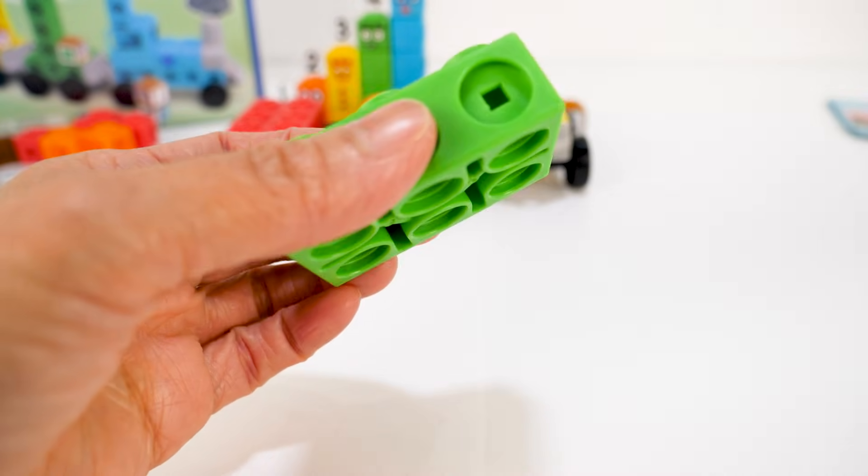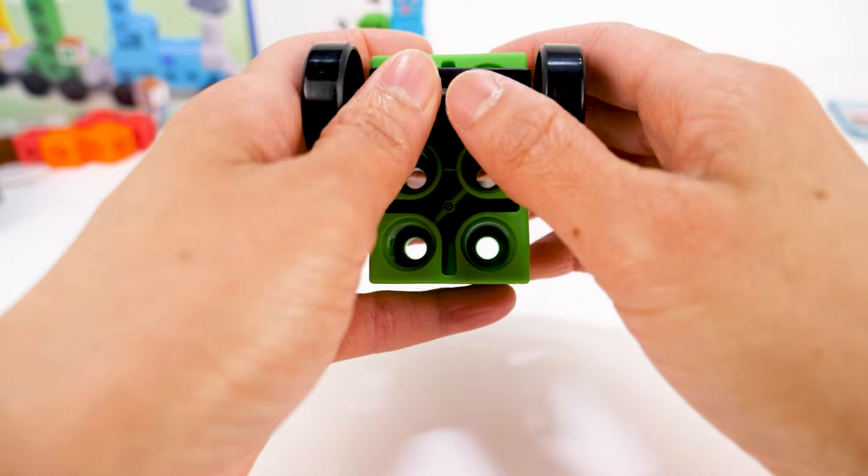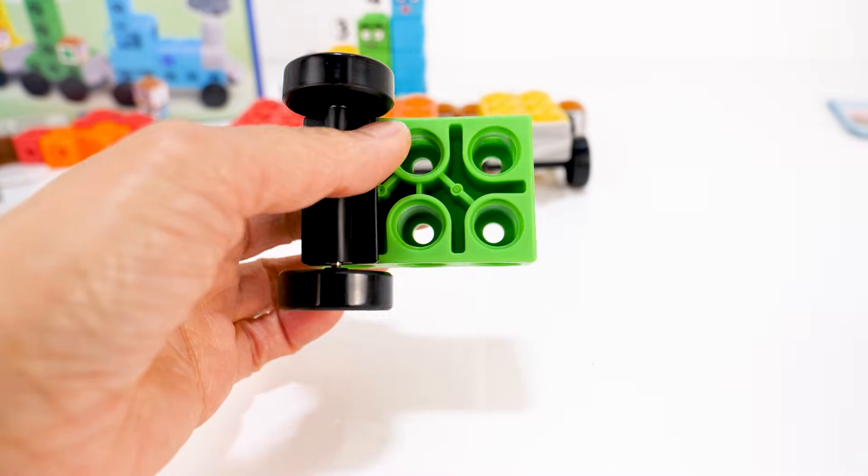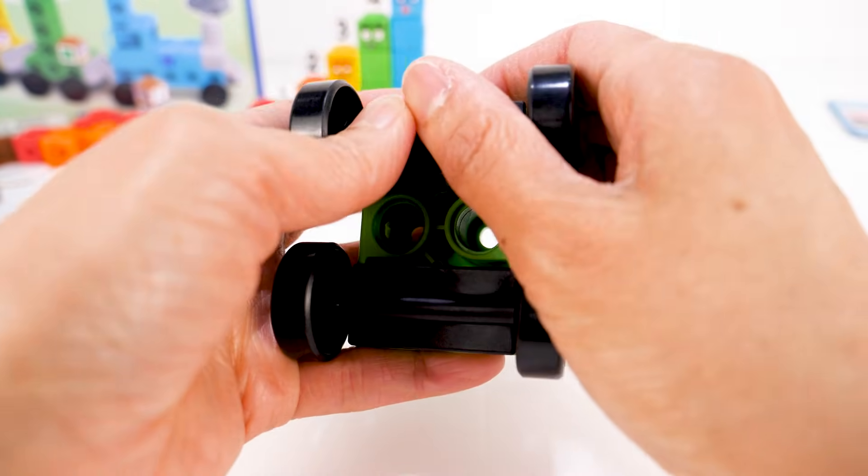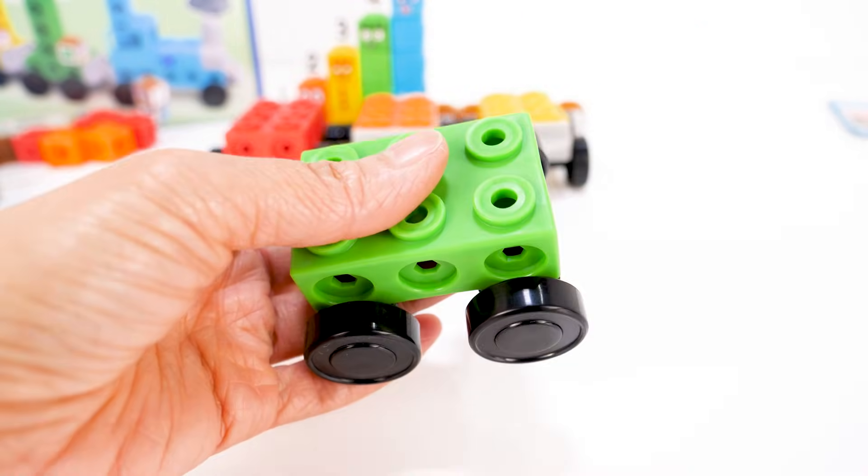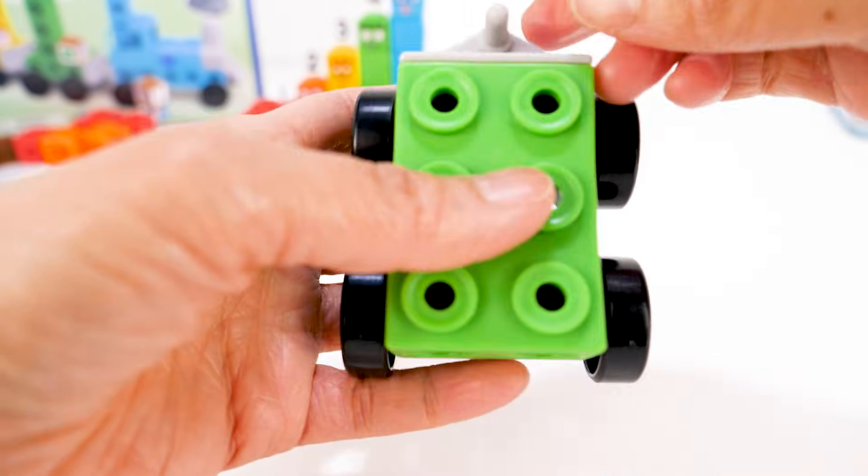Next is the green train car. The wheels, then the two connecting pieces.